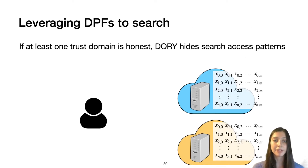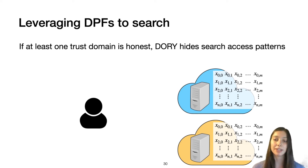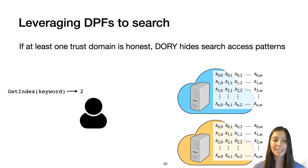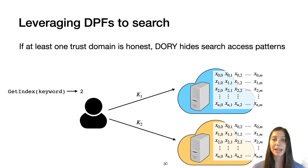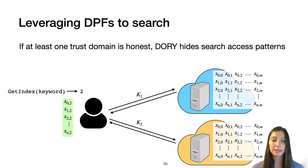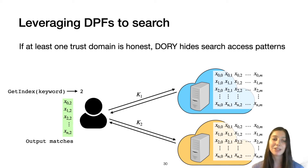Now I'll discuss how we leverage DPFs in Dory search, giving us the property that if at least one trust domain is honest, Dory hides search access patterns. Previously we had one server with a copy of the search index; now we have multiple servers split across multiple trust domains, each with an identical copy. To search, the client gets the index corresponding to the keyword, generates DPF keys for that index, and sends them to each server. Each server evaluates its DPF key on each column in a linear scan, sends back responses, and the client assembles the original column and outputs the matches — without either server learning which index was requested.